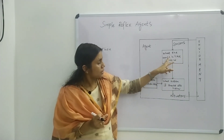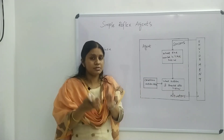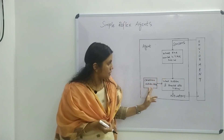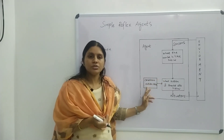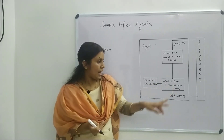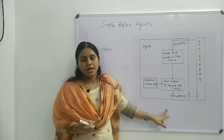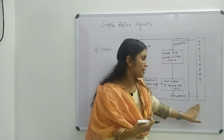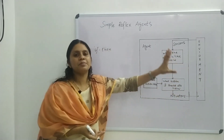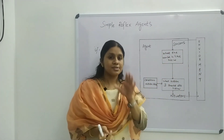What the world is like now — the current situation, the present situation — is considered, and by using the condition-action rule specified, the agent performs the action using its actuators. The action may change the environment. Likewise, a simple reflex agent operates only in a fully observable environment.